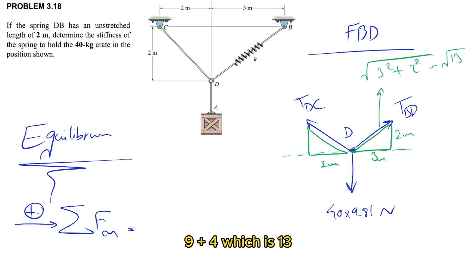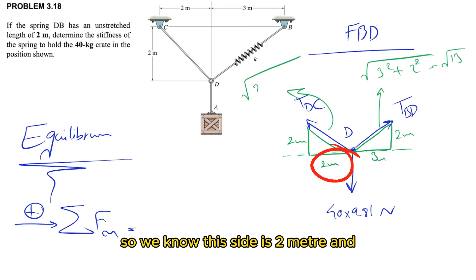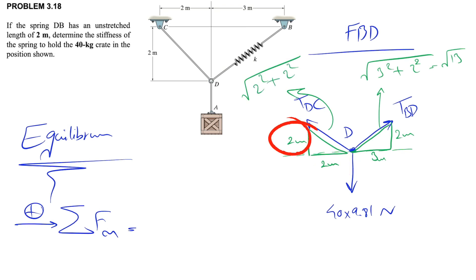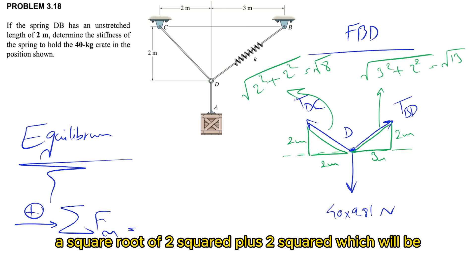We can do the same thing for the other cable. We know this side is 2 meters and this one is 2 meters. Using the Pythagorean theorem again, the hypotenuse will be square root of 2 squared plus 2 squared, which is square root of 8.